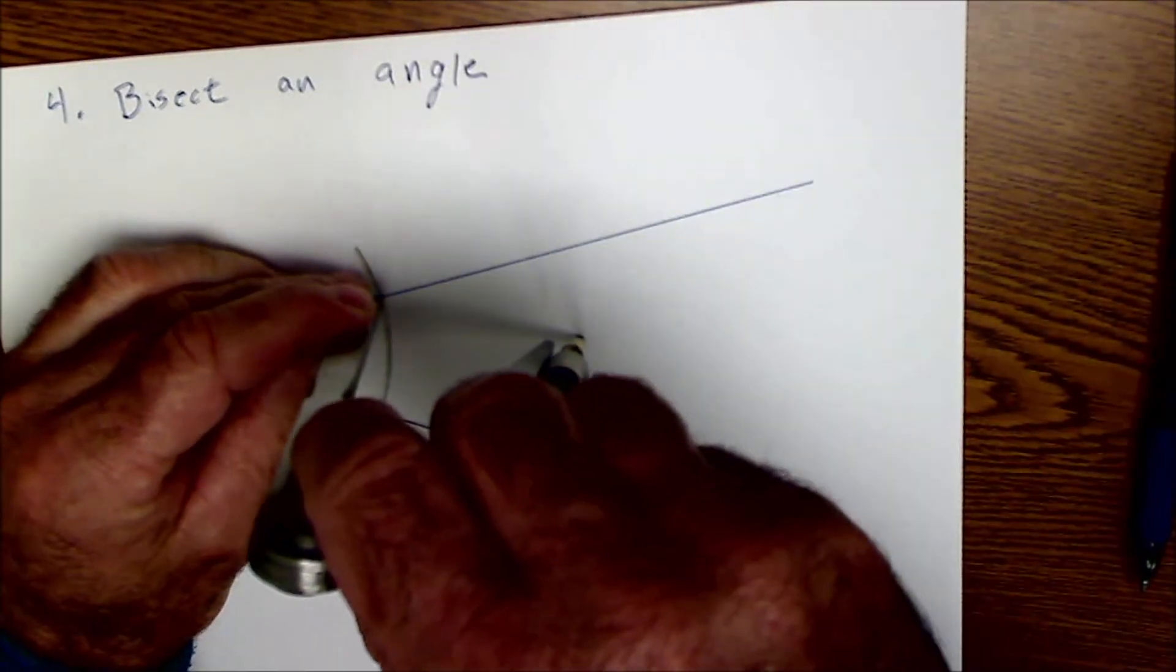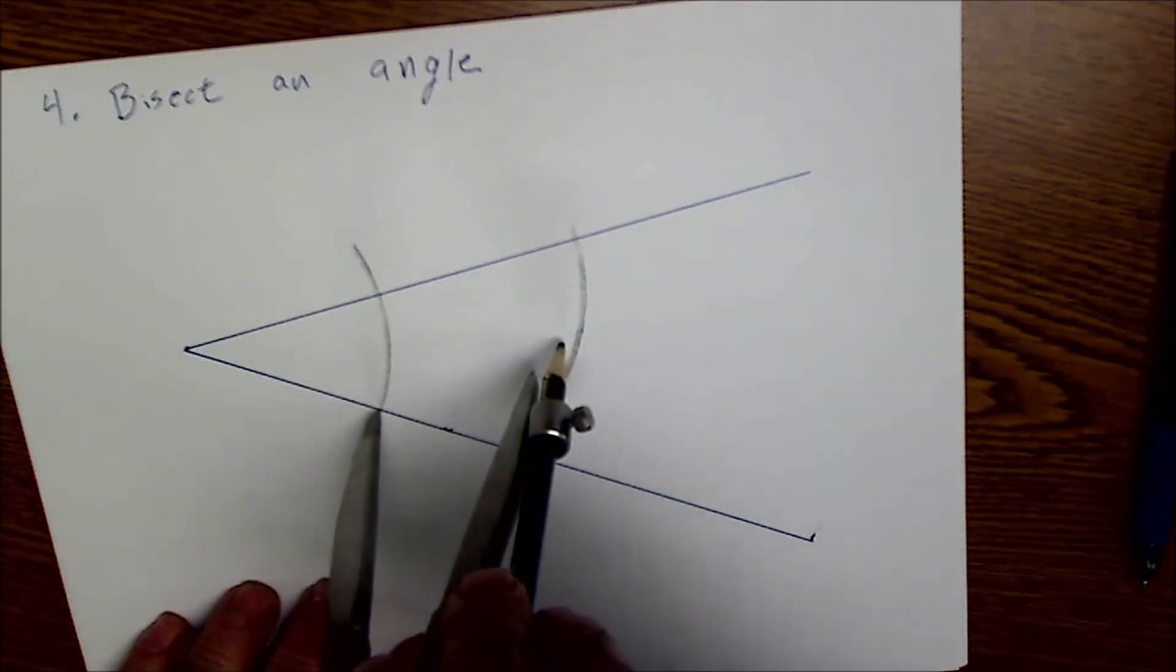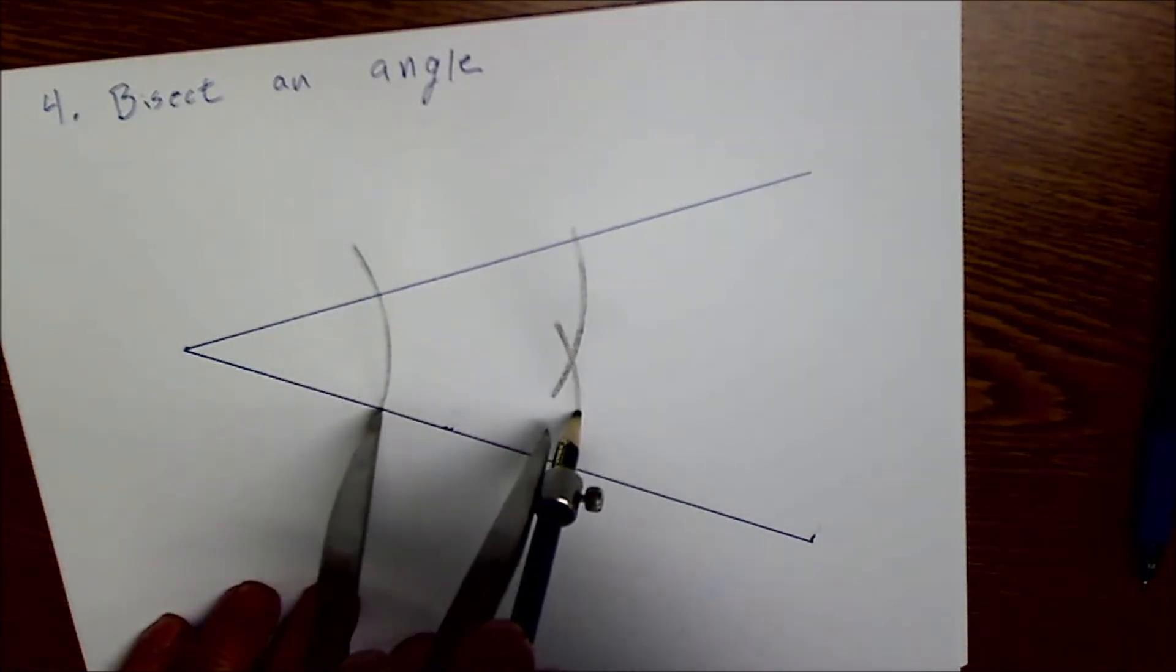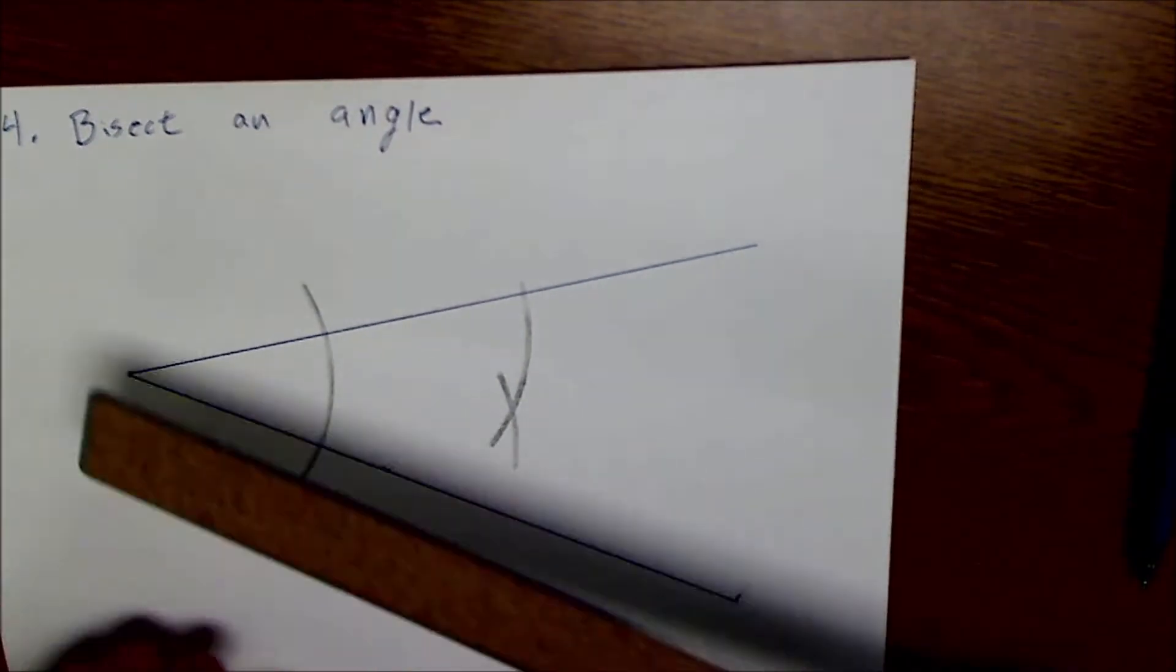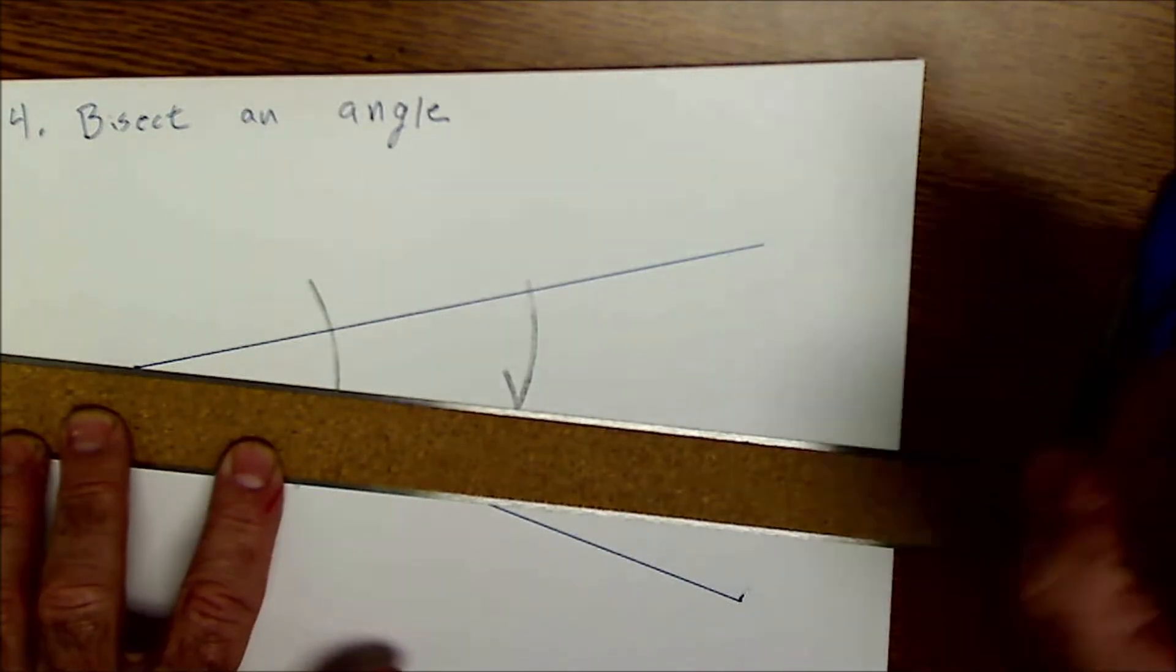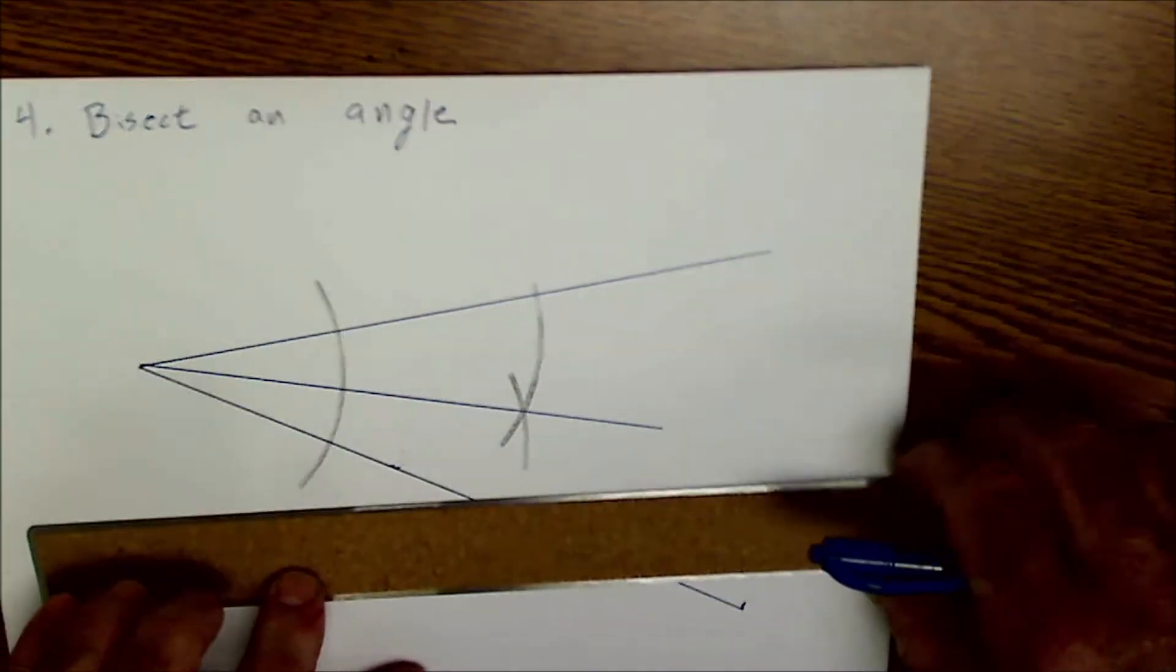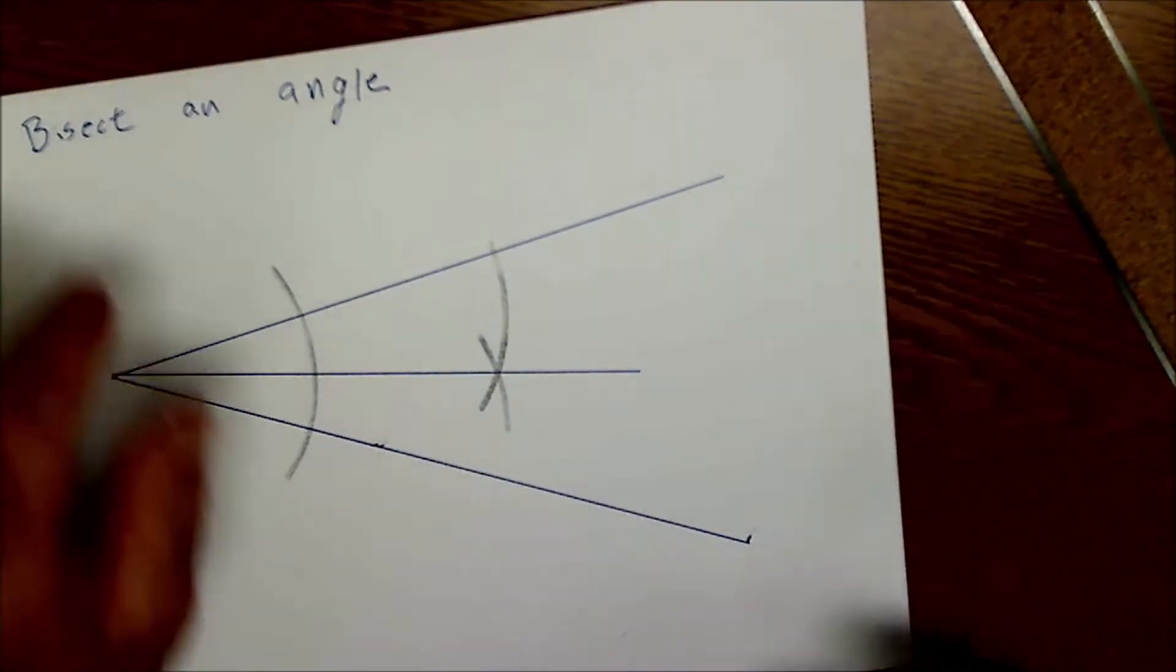Then I'm going to draw another set of arcs right here. And where these set of arcs intersect is going to be all points equidistant. And then now using my straight edge, I'm going to go from the vertex through that point of intersection. And that's going to give me, number four, my angle bisector.